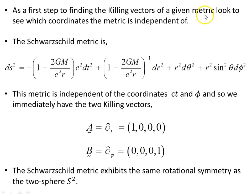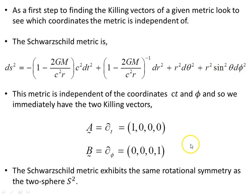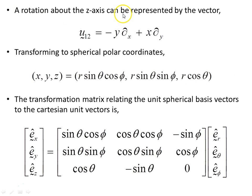As a first step to finding the killing vectors of a given metric, look to see which coordinates the metric is independent of. Here's the Schwarzschild metric. This metric is independent of the time coordinate and the phi angular coordinate — you can see there is no time or phi in these terms, only r-squared and r-squared sine-squared theta. So we can say we have two killing vectors: one in the time direction and one in the phi direction. The Schwarzschild metric also exhibits the same rotational symmetry as the two-sphere S2, so the rotation about the z-axis can be represented by this vector as seen earlier, and we can transform it to spherical polar coordinates.